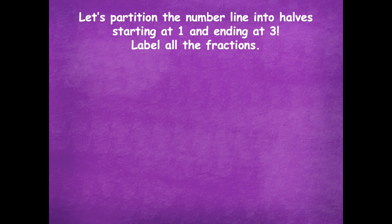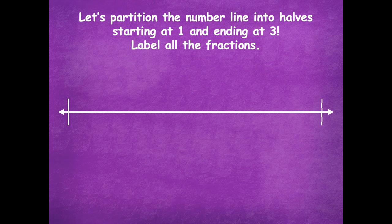So we're going to partition the number line into halves starting at one and ending at three, and label all the fractions. Before you can label, you have to check: do I have all of the whole numbers labeled on this number line? I have one as my starting point and three as my ending point. We're going to go one, two, three. Make sure you label your wholes and then divide each whole — from one to two in halves, and from two to three in halves. Pause the video, partition your whole number line into halves, label the fractions, and click play when ready.